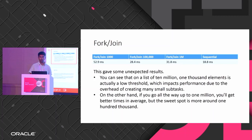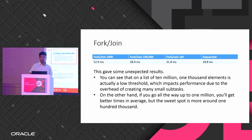So it depends — when you have a more complex task you can use Fork/Join. But you need multiple runs to see which threshold is ideal. For 1,000 I got 52 ms; for 100,000 I got 24 ms; for 1 million I got 31 ms. You need to balance thread management overhead against task granularity.